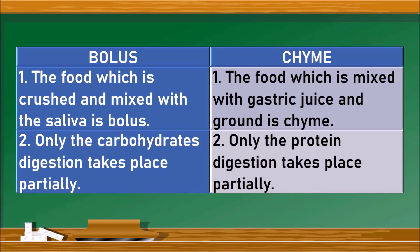In bolus, only carbohydrate digestion takes place partially, whereas in chyme, protein digestion also takes place. Bolus is the food properly chewed in the mouth, whereas chyme is the food that has been properly ground in the stomach.